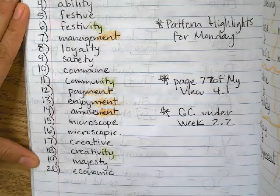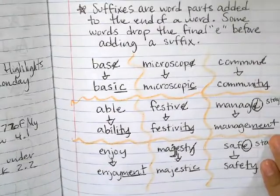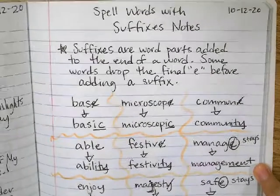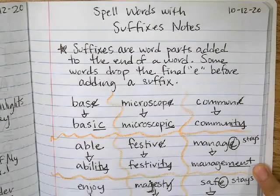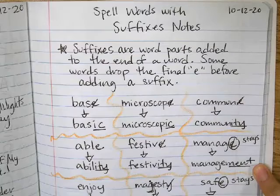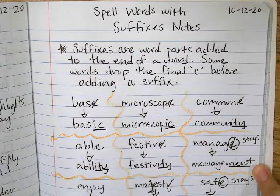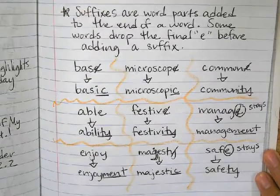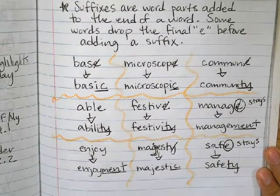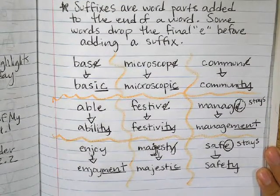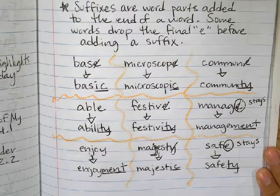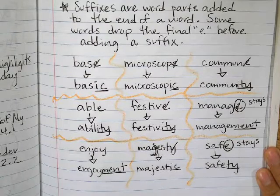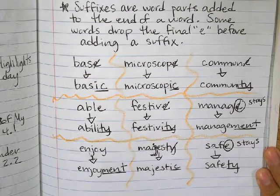On the next page, we did some notes. Suffixes are word parts added to the end of a word. Some words drop the final e before adding a suffix. For example, we have 'base' — we drop the e and add -ic for the suffix, so now it becomes 'basic.'